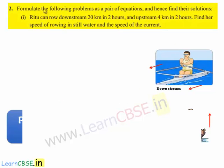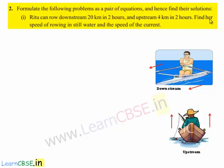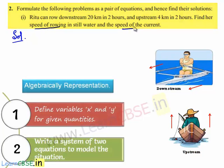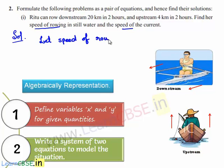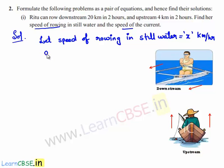Coming to the second problem: Ritu can row downstream 20 kilometers in 2 hours and upstream 4 kilometers in 2 hours. Find her speed of rowing in still water and the speed of the current. Let the speed of rowing in still water = x km/hr and the speed of the current = y km/hr.